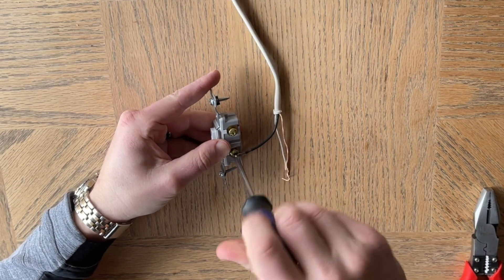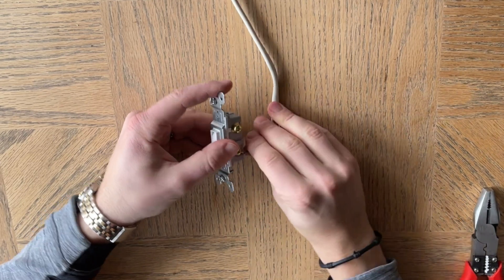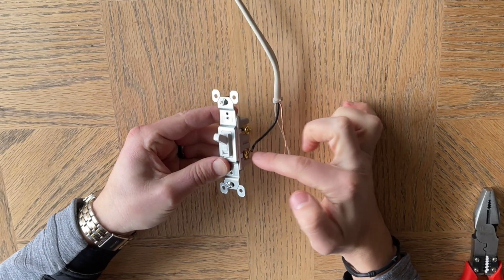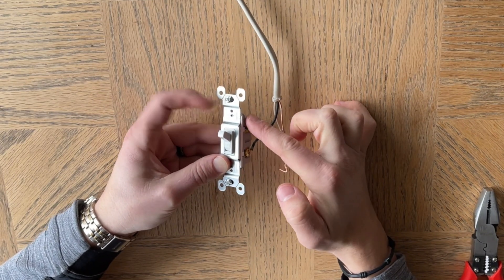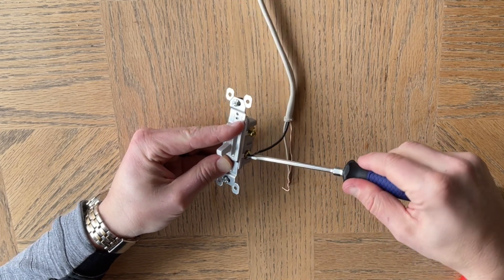Now why do we put the live on the bottom? Because a switch is an interrupter. So when you turn it on, it would be turning up and then taking the power from the bottom terminal up to the top terminal and continuing that circuit flow. When it's off, it's breaking the circuit.